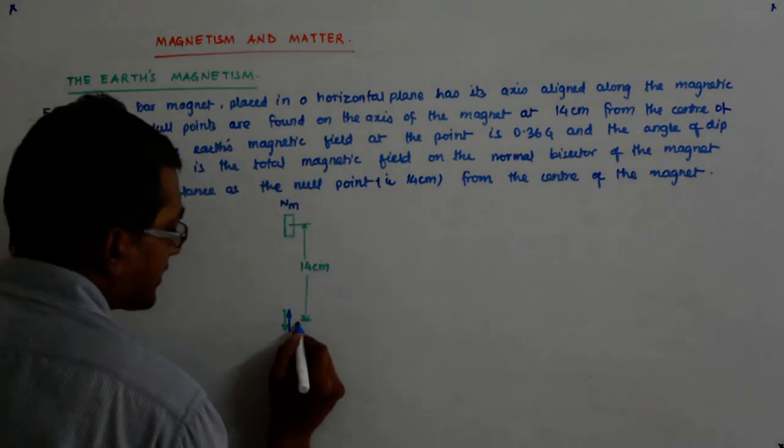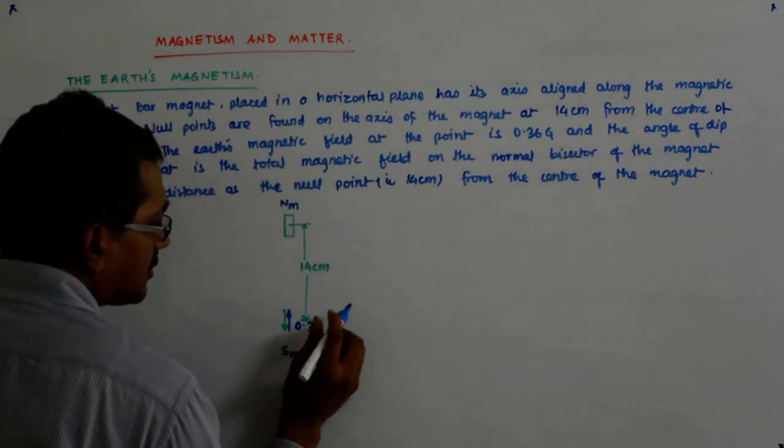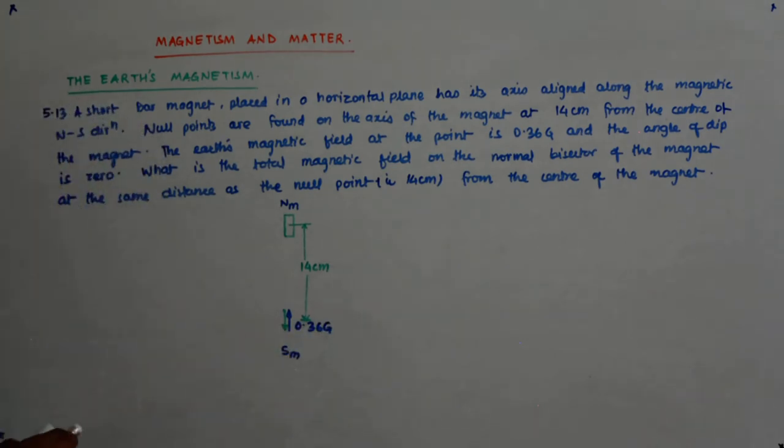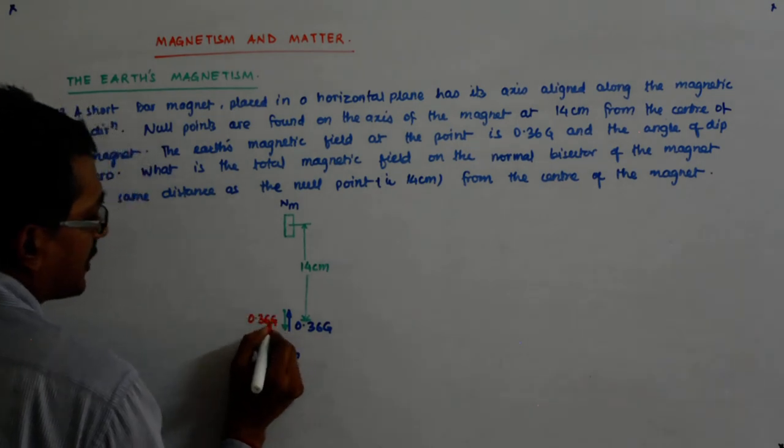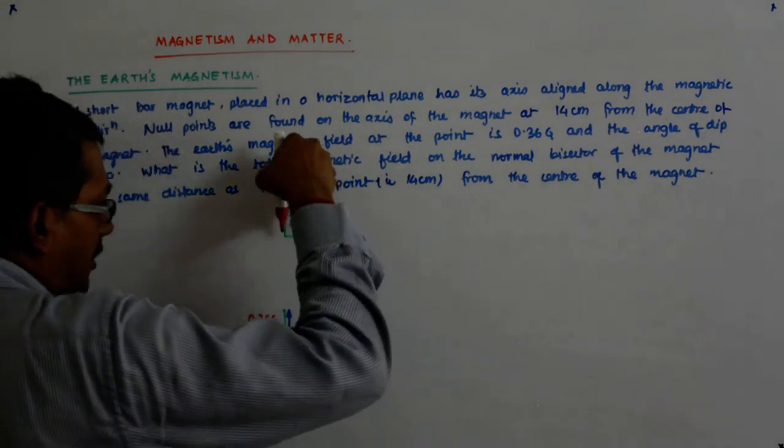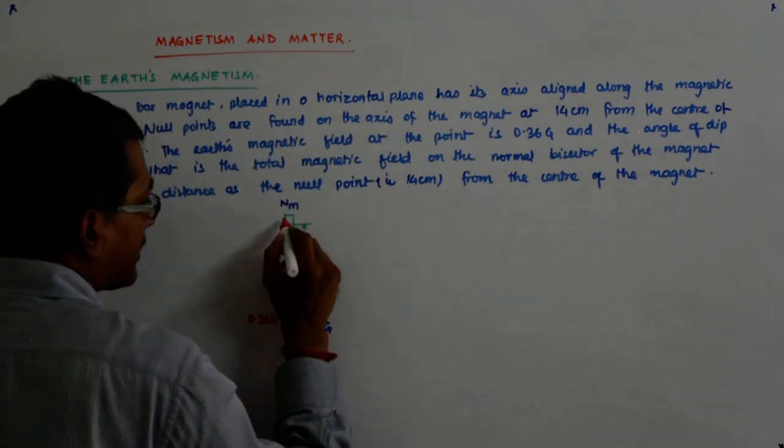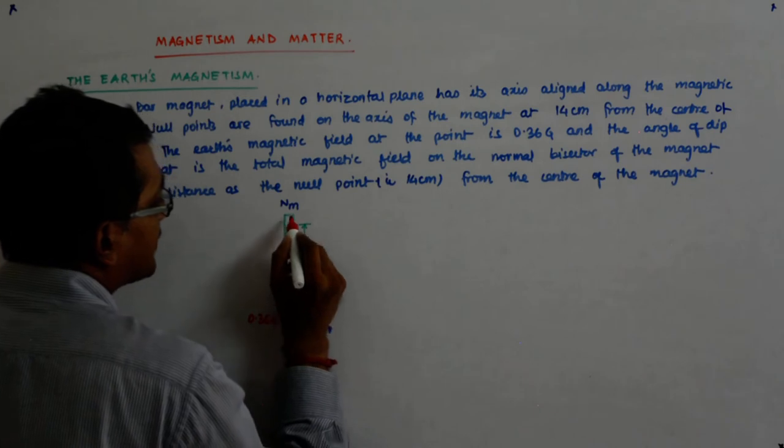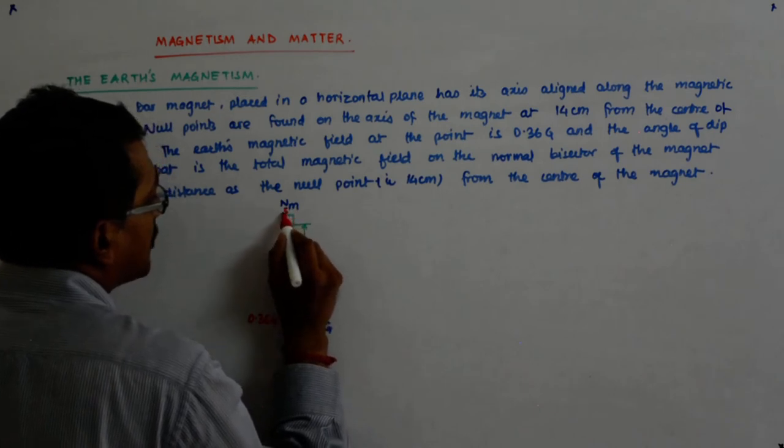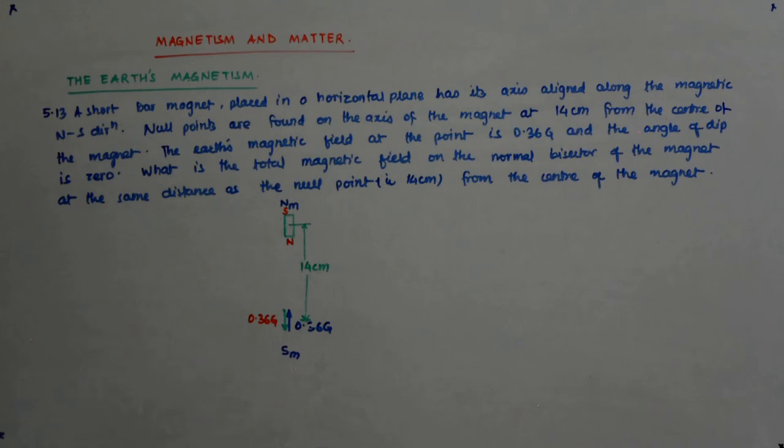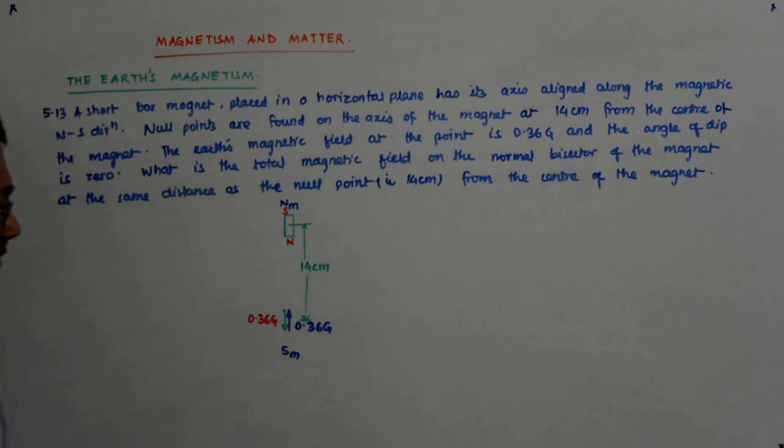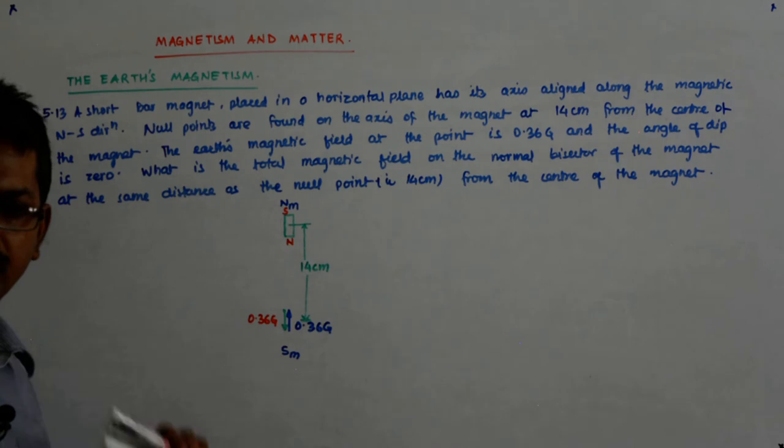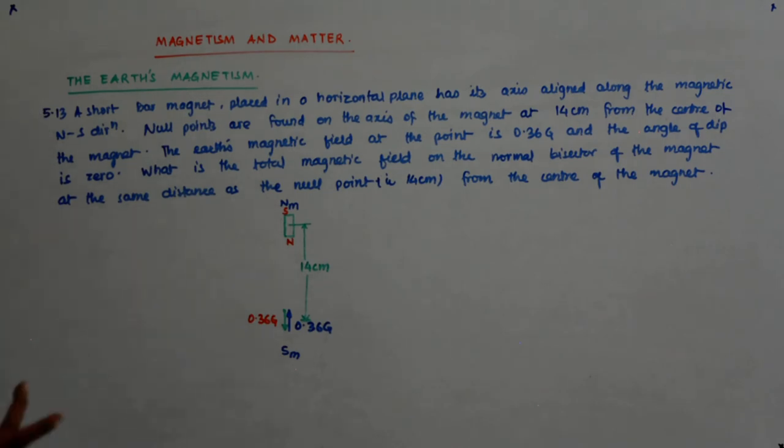It will form a null point only when the earth's magnetic field was 0.36 Gauss. Then the field due to the magnet should also be 0.36 Gauss in the opposite direction. For the magnetic field to be in this direction, its magnetic moment will also be in this direction. That means this is the north and this is the south pole of it. And this gets canceled, so this is zero out here.